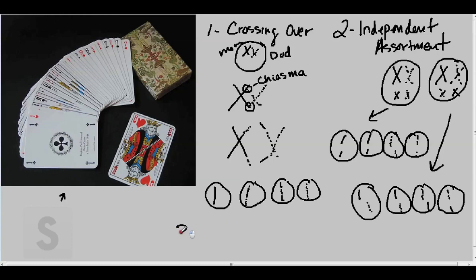The third shuffle of our genetic deck comes from the process of random fertilization. Random fertilization just means that any egg could pair with any sperm. It's a completely random process. Keep in mind that when eggs are formed, only one is formed and the other three are polar bodies. But any sperm could potentially fertilize that egg.